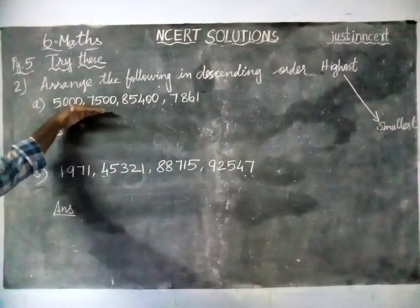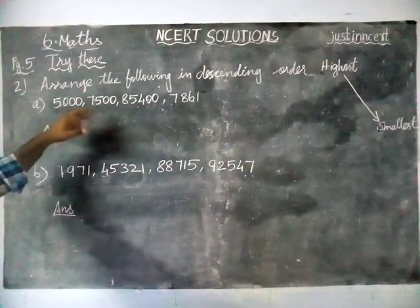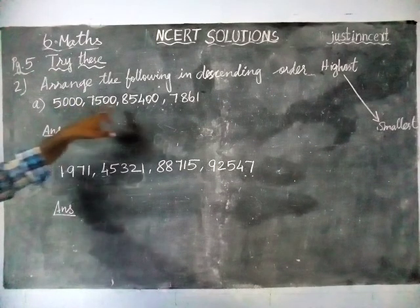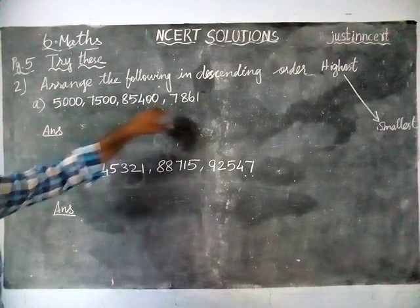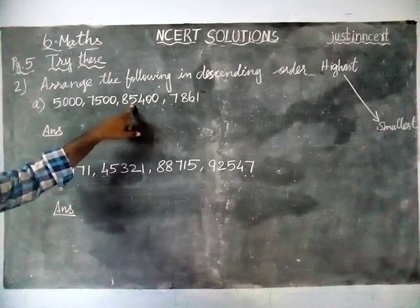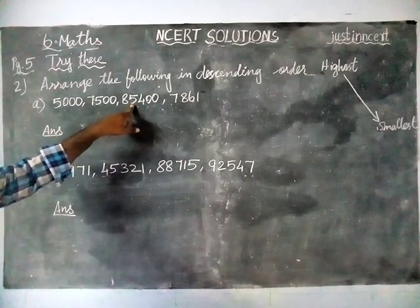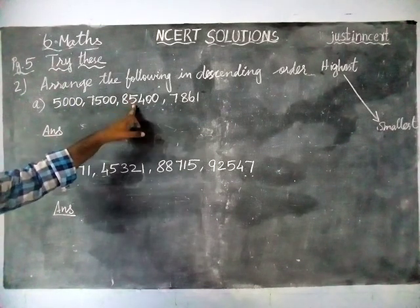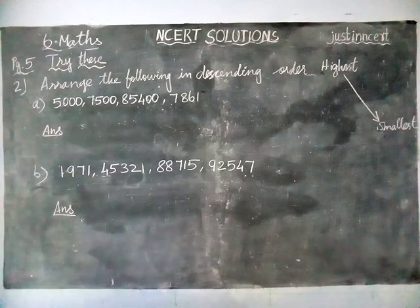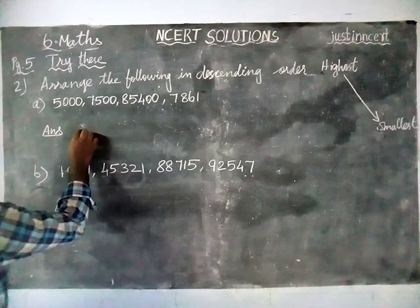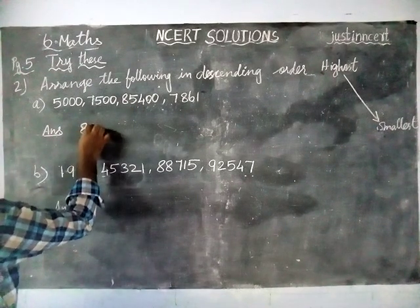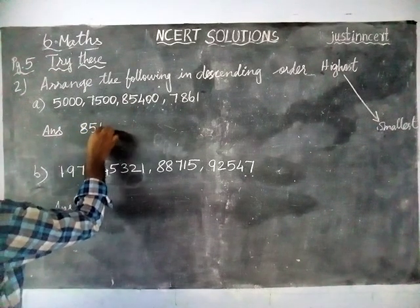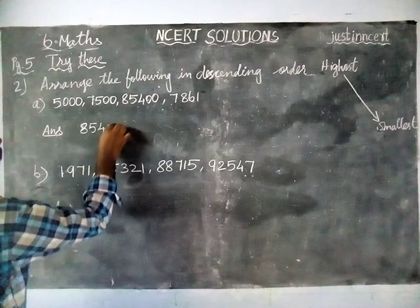Here they have given 4 numbers. In this, numbers 1, 2, and 3 are 4-digit numbers. This is a 5-digit number. So, without any doubt, the 5-digit number is the greatest number. We are writing that: 85,400.